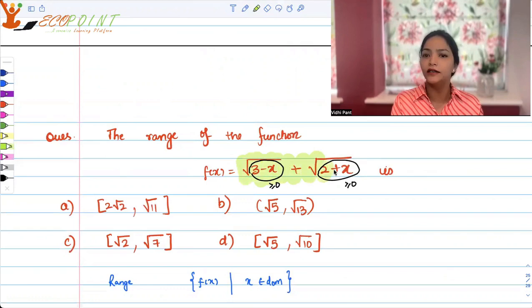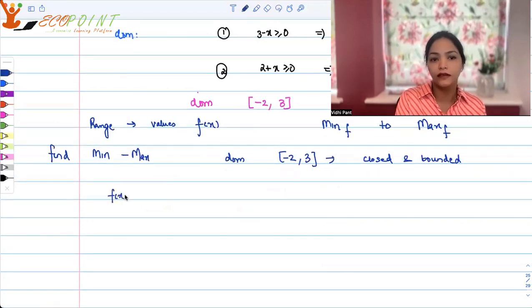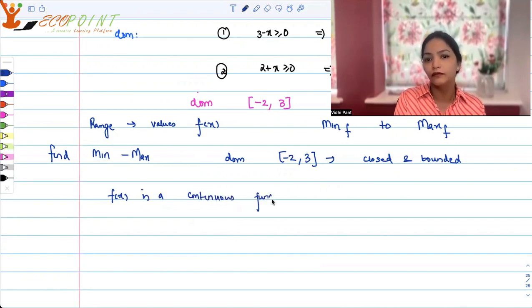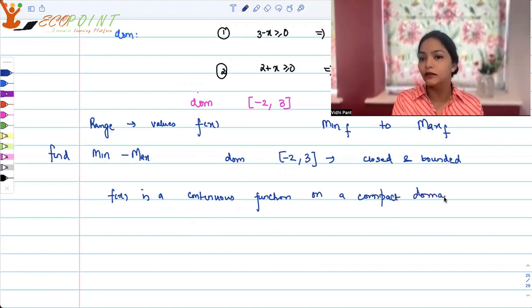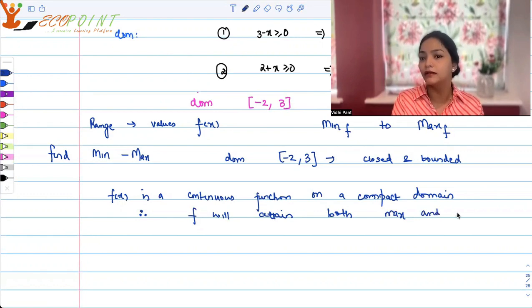And the function, if you look at the function, the function is a continuous function. Whatever value of x you will put, something will come out. It will never break, right? The function will never break. So f(x) is a continuous function on a compact domain. Compact means closed and bounded.